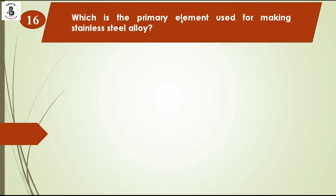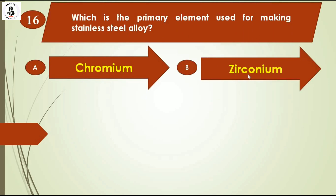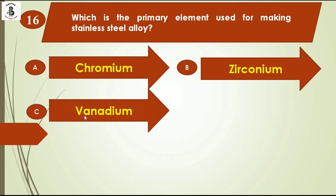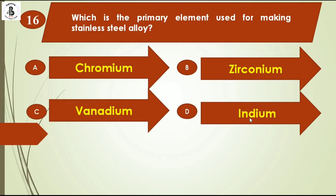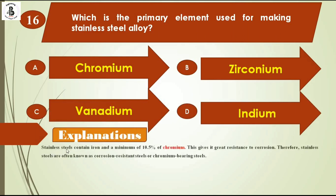Which is the primary element used for making stainless steel alloys? Option A Chromium, option B Zirconium, option C Vanadium, option D Indium. Stainless steel contains iron and a minimum of 10.5% chromium, which gives greater resistance to corrosion. Therefore, stainless steels are often known as corrosion-resistant steels or chromium-bearing steels. In most stainless steels, around 10 to 11% chromium is present. So the right answer is option A, Chromium.